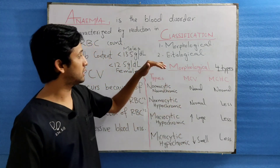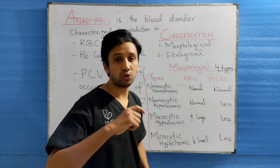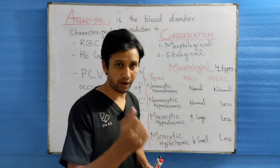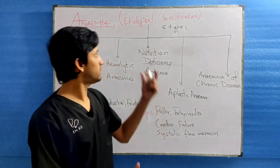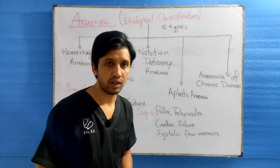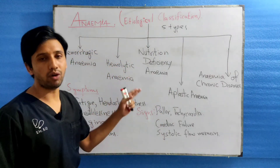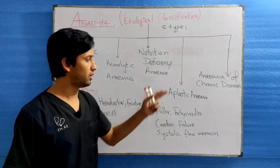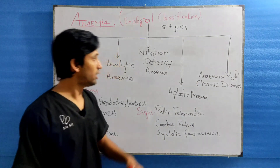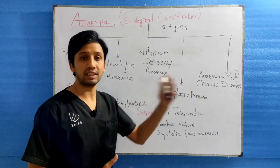Next, we discuss the etiological types of anemia — that is, classification by origin or cause. Etiologically, anemia is divided into five types: number one is hemorrhagic anemia, second is hemolytic anemia, third is nutritional deficiency anemia, fourth is aplastic anemia, and the last one is anemia of chronic diseases. The causes of these types will be discussed in my next lectures.